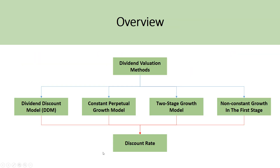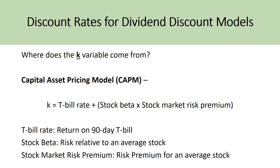To recap, the four methods used to value a dividend-paying stock are: the dividend discount model, the constant perpetual growth model, the two-stage growth model, and the non-constant growth in the first stage. Regarding the K variable — the discount rate — it comes from the capital asset pricing model (CAPM), which illustrates the relationship between risk and return. CAPM combines the risk-free rate, plus the stock's beta, plus the market risk premium, to provide the expected return used as the discount rate in dividend valuation models. In another video, the G variable and growth rate will be covered in depth.